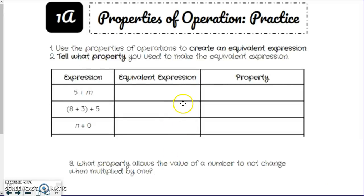So you have some practice here. This is just the top half of it, but I just want to give you a real quick preview of it. So you're going to use the properties of operations to create an equivalent expression. Tell what property you use to make an equivalent expression. So here's your expression. You need to write an equivalent expression to that and tell what property you use. Now, if you're going to use the identity property, you really want to be mindful, like this one, for example, n plus 0. Well, obviously, that's using 0, so it's going to be using the identity property.